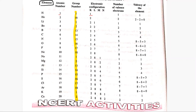Atomic number 1 has electronic configuration 1. Atomic number 2 is 2. For 3, it is 2, 1. Configurations continue up to 2, 8. For atomic number 11, it is 2, 8, 1. For 12, it is 2, 8, 2. For 18, it is 2, 8, 8. For 19, it is 2, 8, 8, 1. And for 20, it is 2, 8, 8, 2.